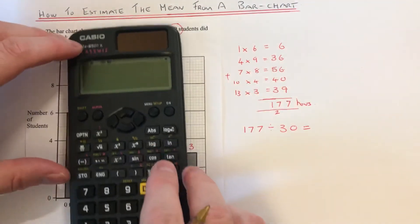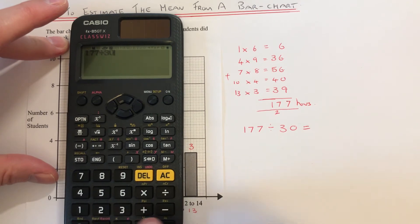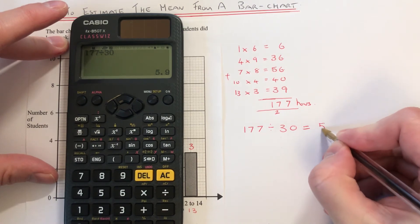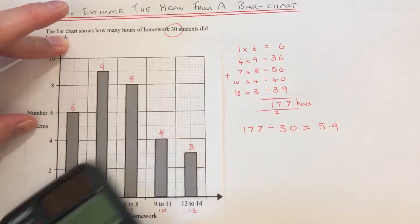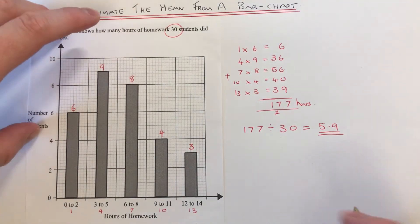So if we go 177 divided by 30, we get an answer of 5.9 hours of homework per student. So that is your mean average.